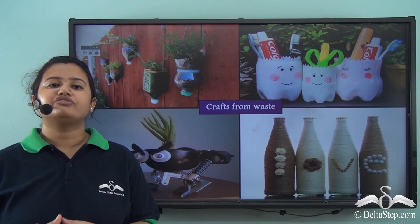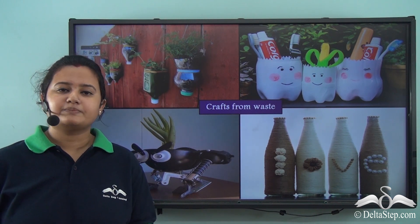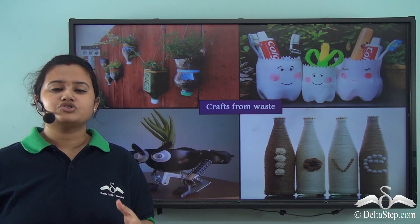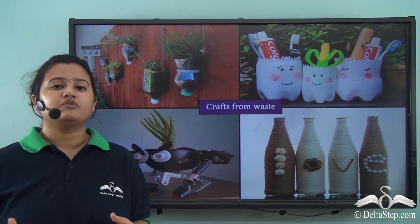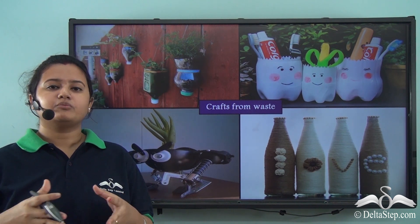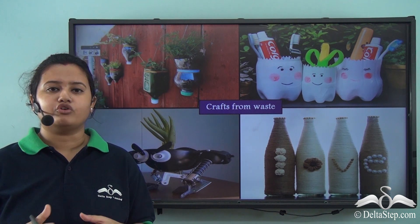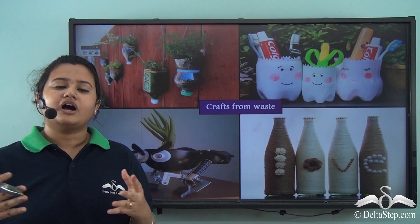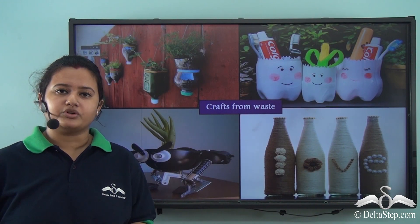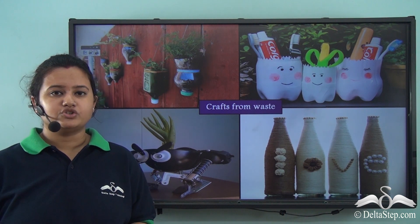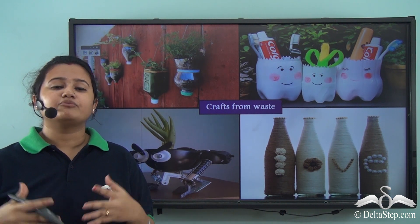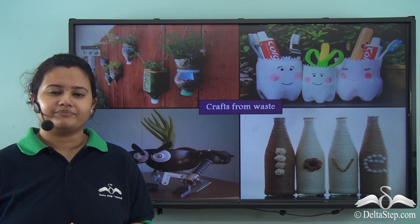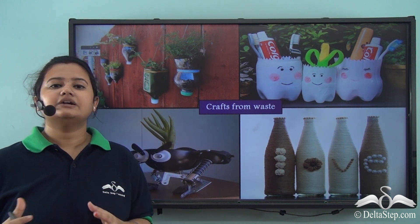In today's video we first understood what oil spill is — the accidental release of oil onto the surface of large water bodies, especially saline water bodies. Apart from oil spill, fresh water pollutants and dumping of plastics also lead to pollution of saline water bodies. We understood that the contamination of saline water bodies is known as marine pollution, discussed its harmful effects, and the ways to control it. In our next video we will discuss thermal pollution.